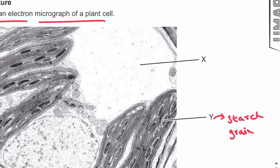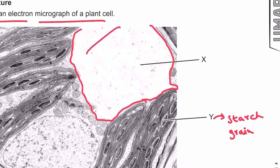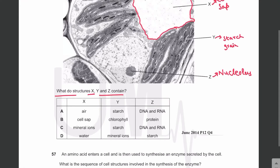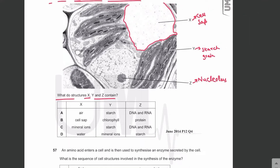The membrane of the sap vacuole is the tonoplast, and inside it is the liquid called cell sap. So X is the cell sap. X contains cell sap — mineral ions or water; Y contains starch because it is a starch grain; Z contains DNA and RNA, since the nucleolus is loops of DNA that synthesize ribosomal RNA. The answer is C.